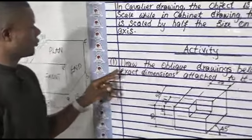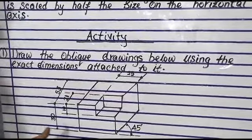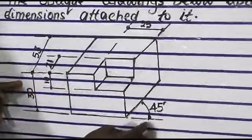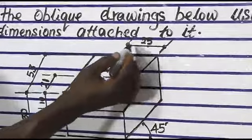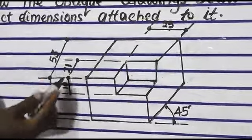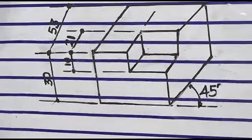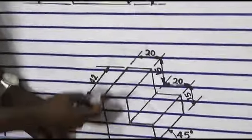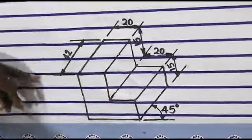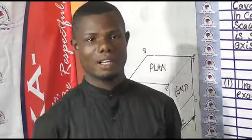I have an activity for you. Draw the big drawings below using the exact dimensions attached to them. You can see the drawings — the first one has the angle of 45 degrees, dimensions of 5mm, 52mm, 21mm, 10mm, and 30mm. The second one you have to do the same thing — reproduce the complete drawing using the exact dimensions attached. That is all for today; we've come to the end of the class. Until I come your way again, stay safe. Thank you.